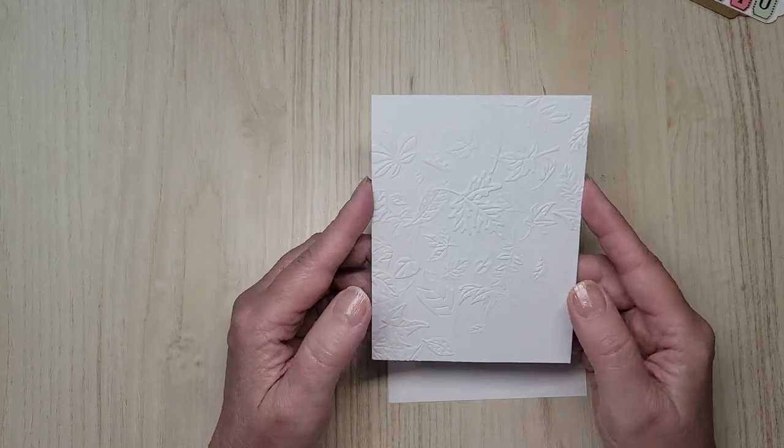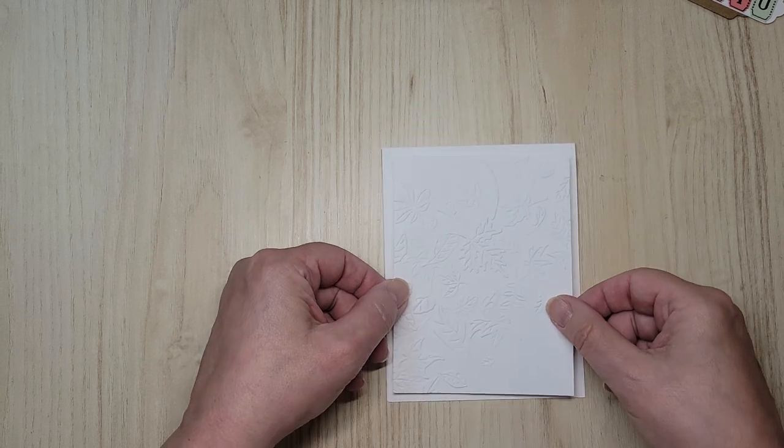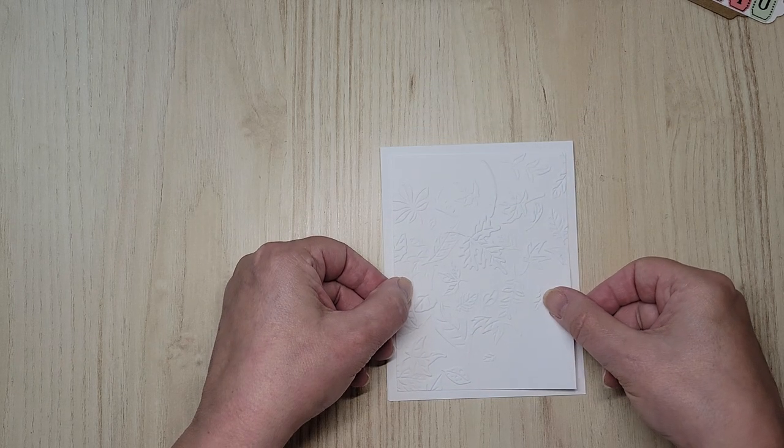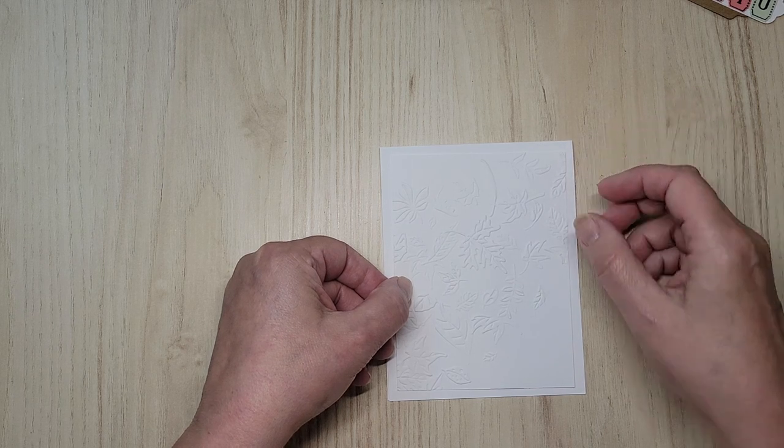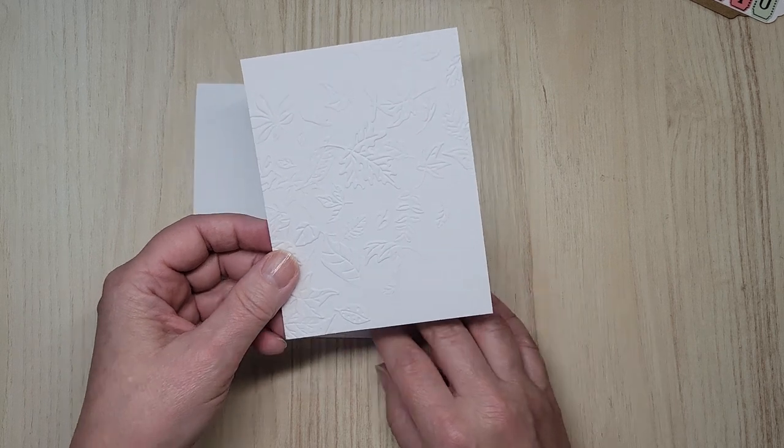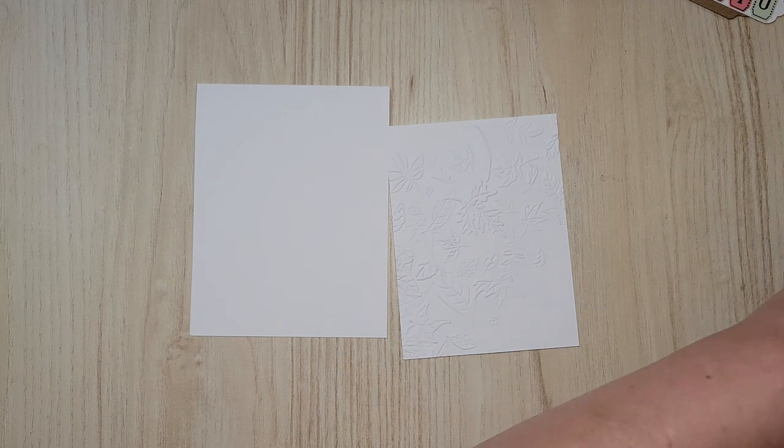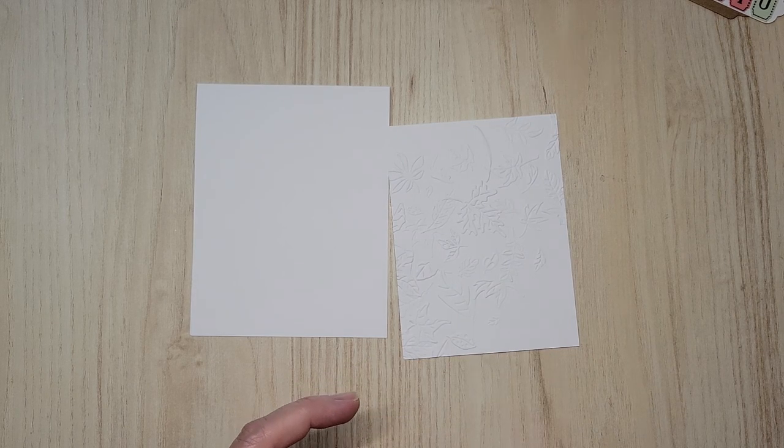And then this piece, also just the regular basic white, this is three and seven eighths by five and one eighth. I wanted it to be smaller than my usual, just taking an eighth off. I thought that would look really pretty. I this is, it really helps to look at your sample before you get cutting.